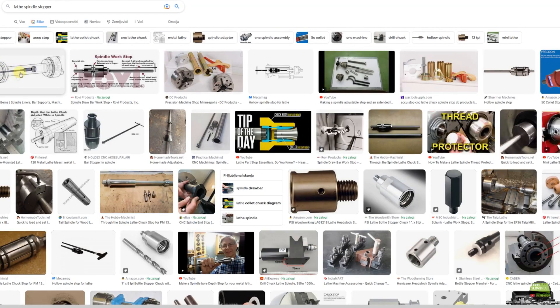A spindle stopper is a piece we fix inside of the spindle which limits how deep the turning part can clamp into the chuck, and it's very common in serial production.